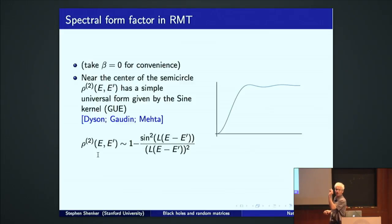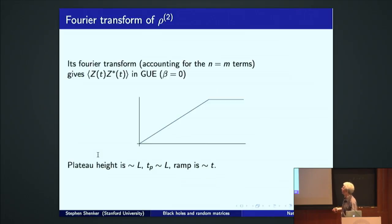This is the function. This is what it looks like. This is energy difference. This is correlation. When the eigenvalues are on top of each other, the density vanishes because they repel. At long distances, you just go to the mean density. And you wiggle a little bit and then you approach the mean density by a one over energy squared approach.